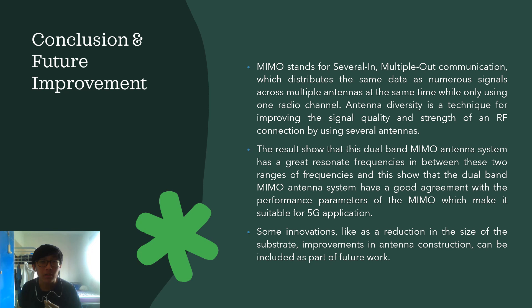Lastly, I would like to present about the conclusion and future improvements for this project. For MIMO communication, which distributes the same data as numerous signals across multiple antennas simultaneously while using only one regular channel, the results showed that this dual-band MIMO antenna system has a great resonant frequency within the two frequency ranges. This shows that the dual-band MIMO antenna system has great agreement with the performance parameters of MIMO, making it suitable for 5G applications. For future work, innovations such as a reduction in the size of the substrate and improvement in antenna construction can be included. Thank you, that's all for our presentation.